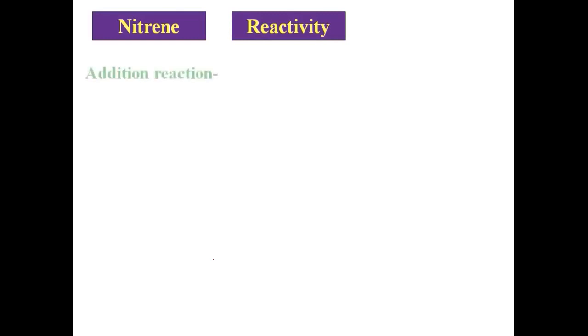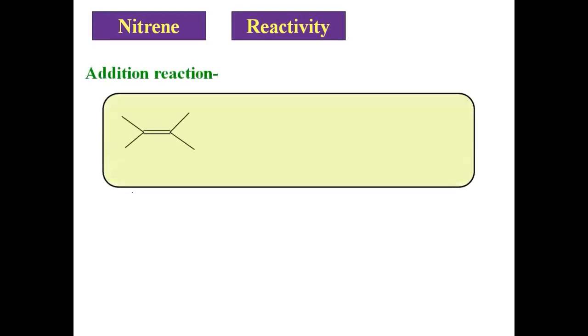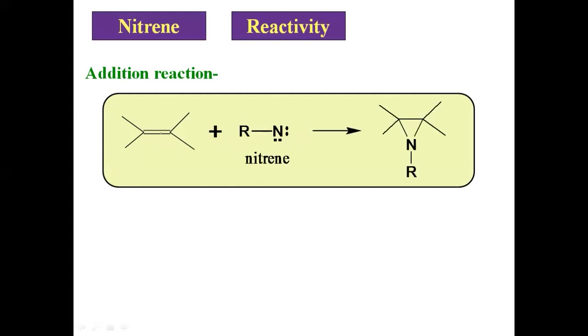Now we will see reactivity. We will see some examples of chemical reactions, particularly organic reactions, which involve the formation of this nitrene intermediate. Let us see a very simple example: the addition reaction. Suppose there is an alkene — a C double bond C. When that alkene comes in contact with any nitrene, addition of that nitrene easily takes place across the C=C, and we get a three-membered cyclic compound. Generally, nitrene can show the addition reaction — it adds to the C=C of the alkene.